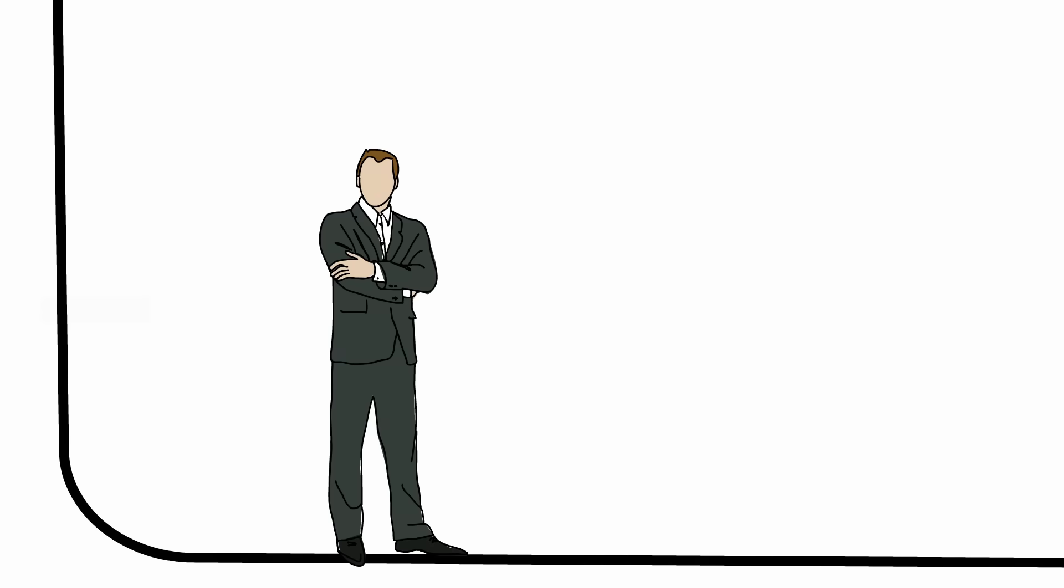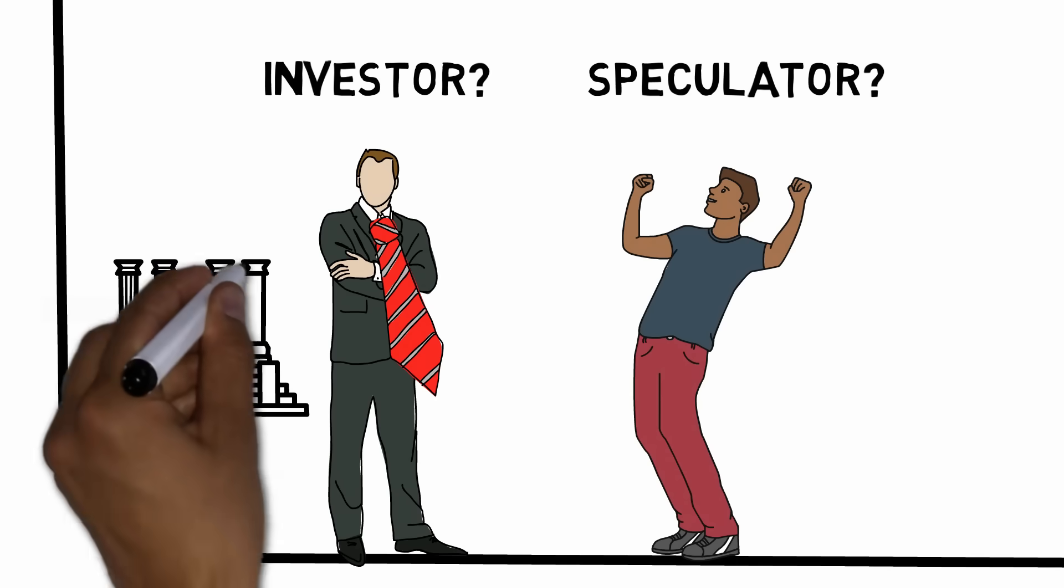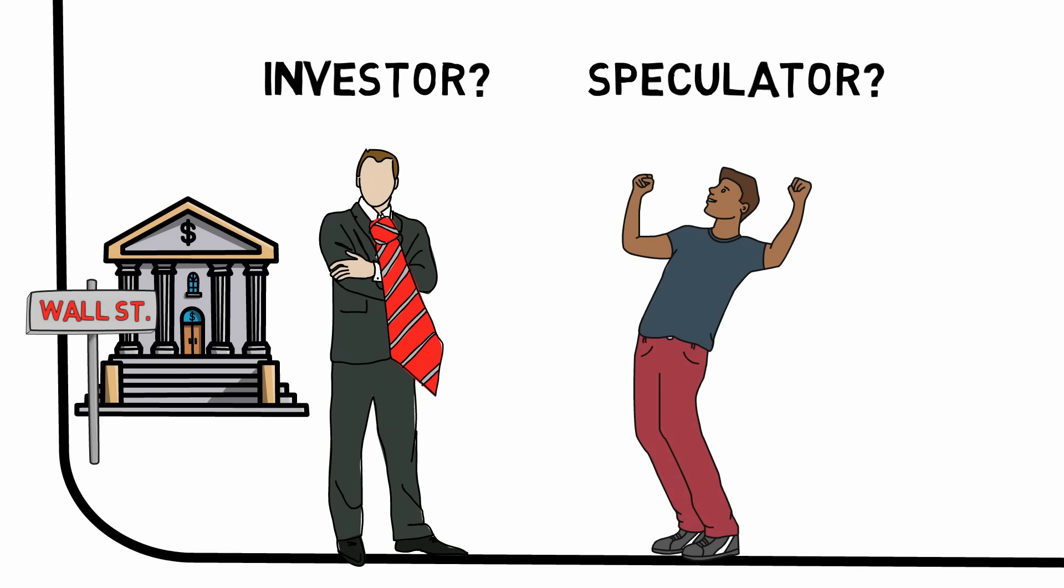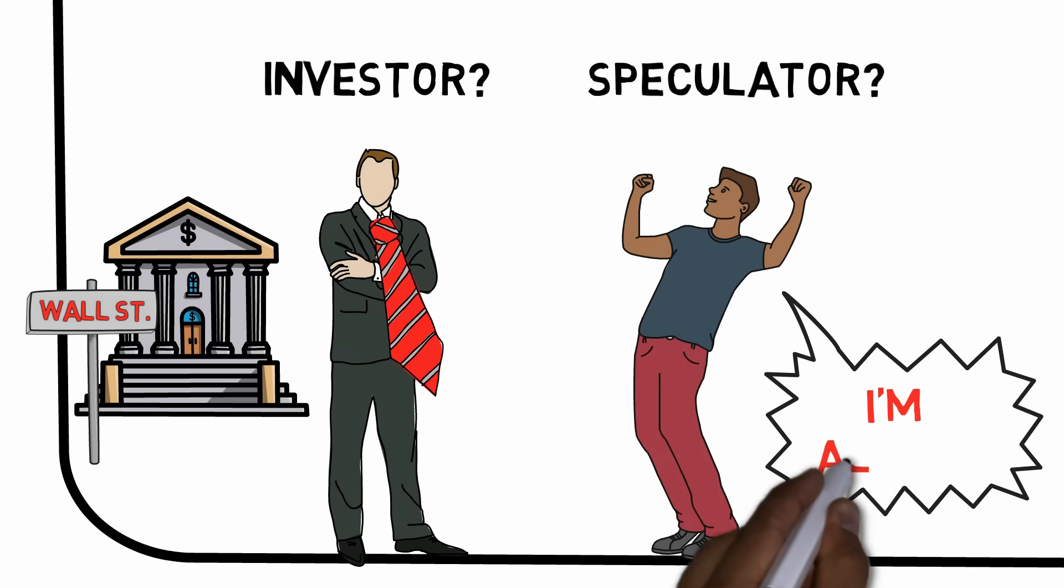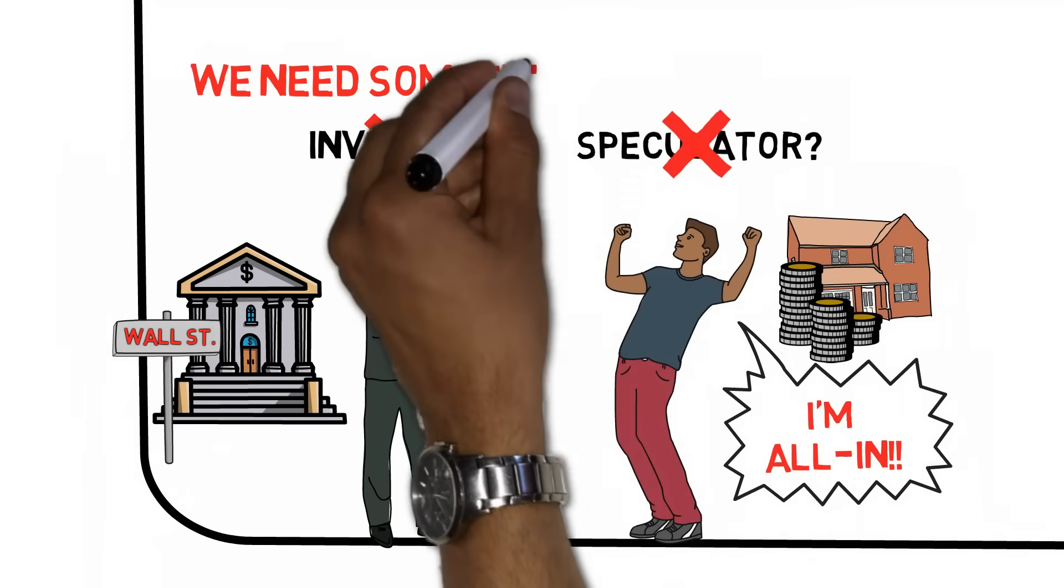What's the difference between an investor and a speculator? Is it that the former wears a tie and is working in some fancy office at some fancy street in cities like New York, London or Stockholm, and that the latter is gambling with his mortgage at the casino? I think we need a more useful definition than that.